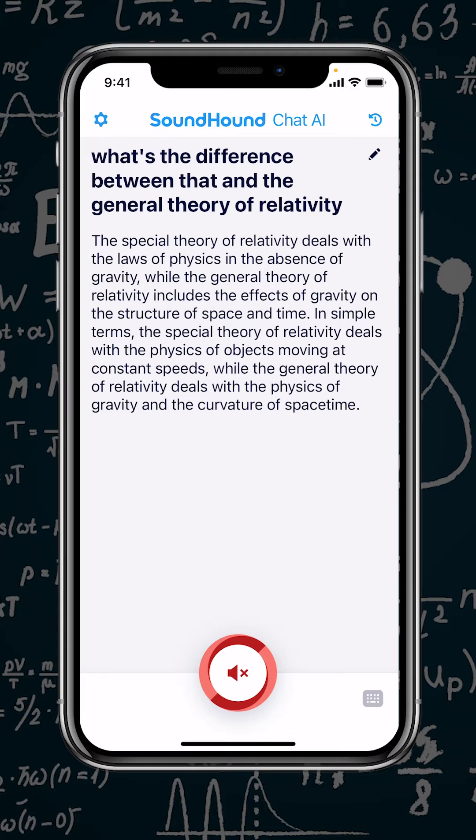In simple terms, the Special Theory of Relativity deals with the physics of objects moving at constant speeds, while the General Theory of Relativity deals with the physics of gravity and the curvature of spacetime.